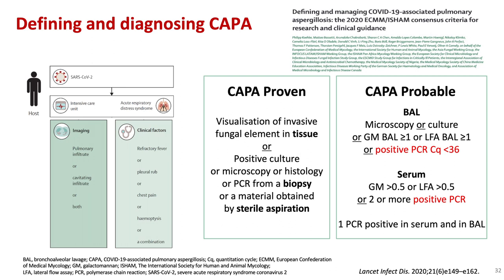The ISHAM consensus criteria for CAPA define probable CAPA using BAL samples. They add PCR and define a Ct value below 36 as significant. This is very important because some experts consider PCR too sensitive — the Ct value helps distinguish true positive from colonization or false positive. Now we all have Ct levels when performing Aspergillus PCR to determine if a result is truly positive.